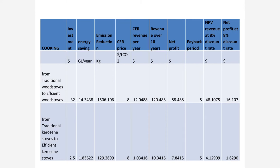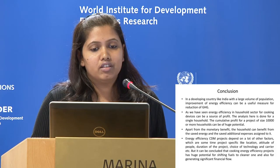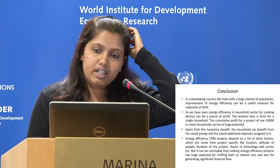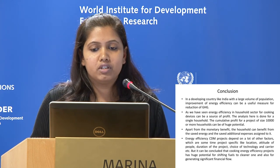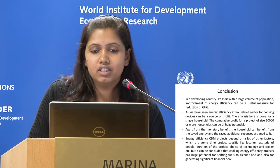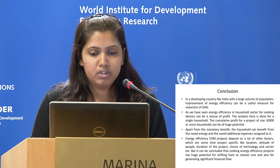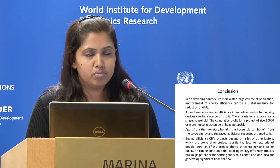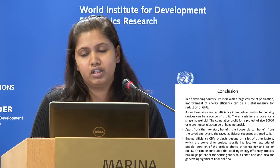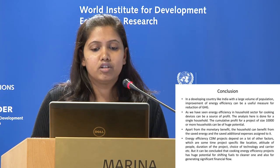We examined investment and energy savings, and taking the CER price at $8 per tonne of CO2, calculated the net profit at an 8% discount rate for both cooking and lighting. We found that in a developing country like India, with a large population, improvement of energy efficiency can be a useful measure for reducing greenhouse gas emissions, and CDM can be used for this purpose. For projects of 10,000 or more households, the cumulative profit would be higher.